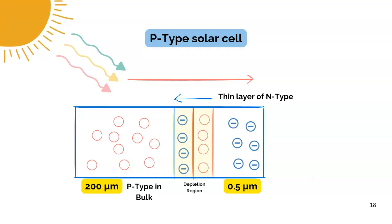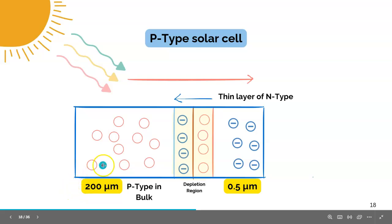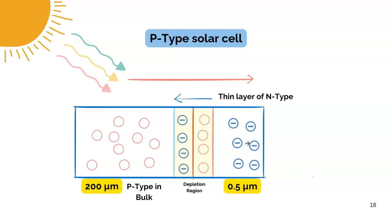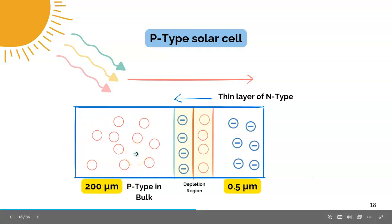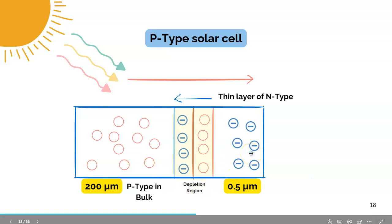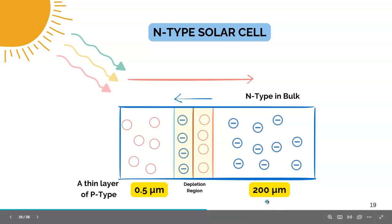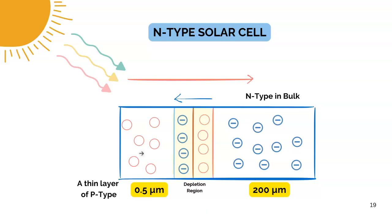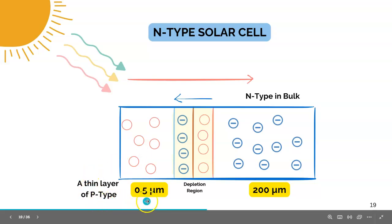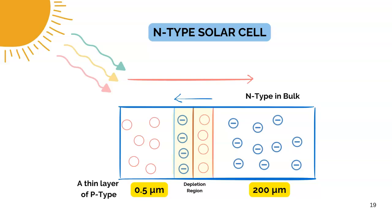We have two types of solar cells: P-type and N-type. In a P-type solar cell, P-type is in bulk form with a thickness of around 200 micrometers, while there is a very thin layer of N-type semiconductor of about 0.5 micrometers. In an N-type solar cell, we have bulk N-type semiconductor of 200 micrometers thickness with a very thin layer of P-type semiconductor of around 0.5 micrometers on top. This is the basic structural difference between P-type and N-type solar cells.